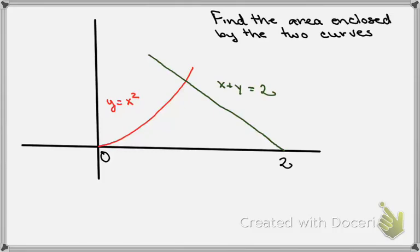In this problem, we'd like to find the area enclosed by these two curves: y equals x squared and x plus y equals 2.